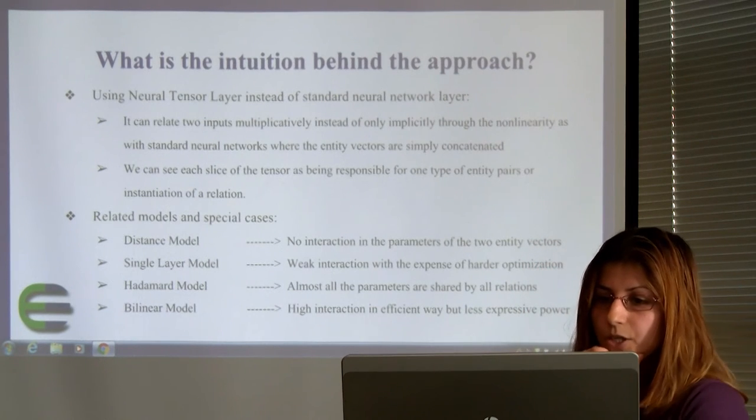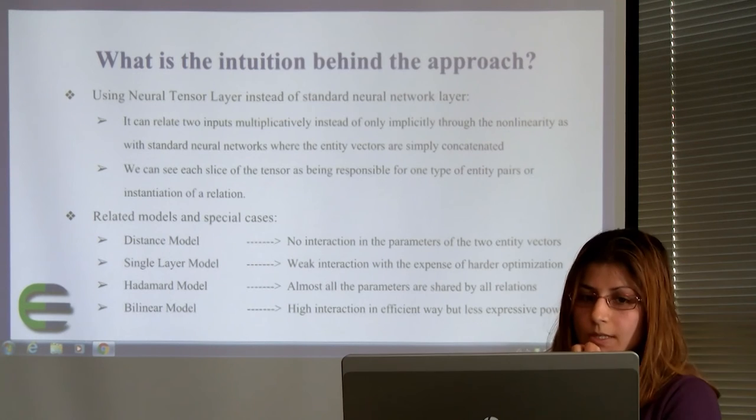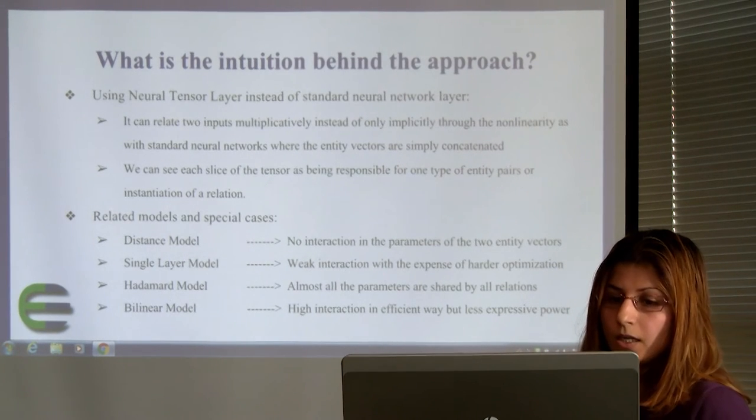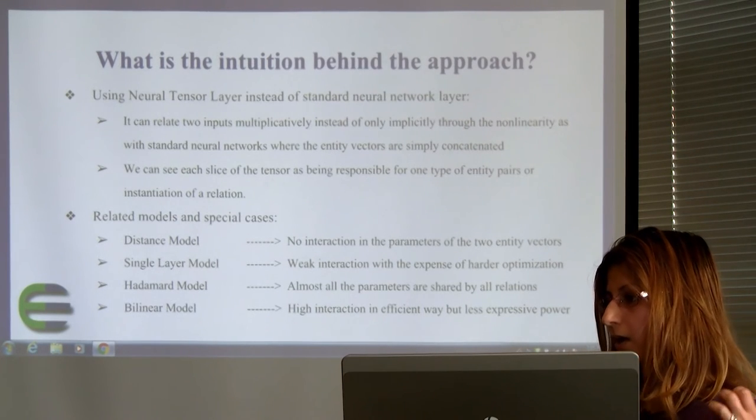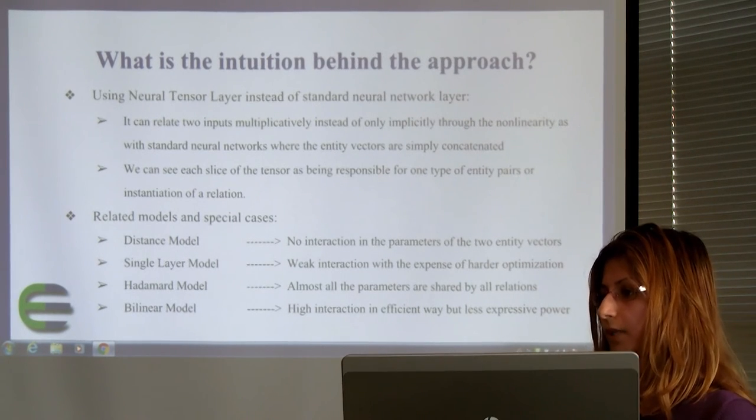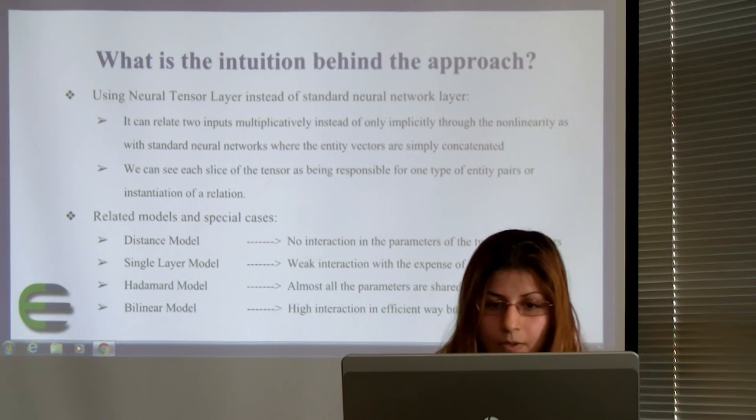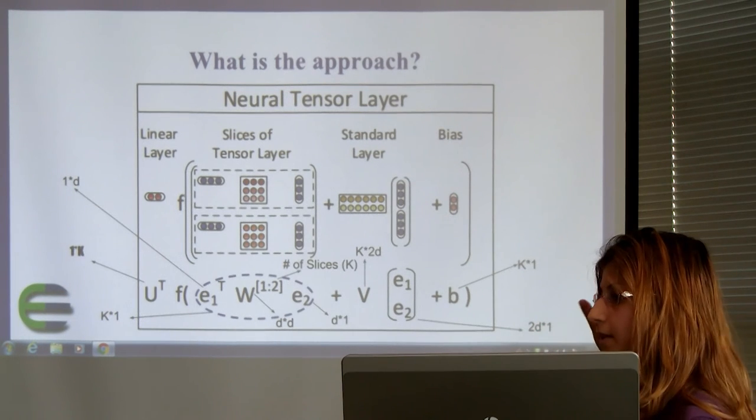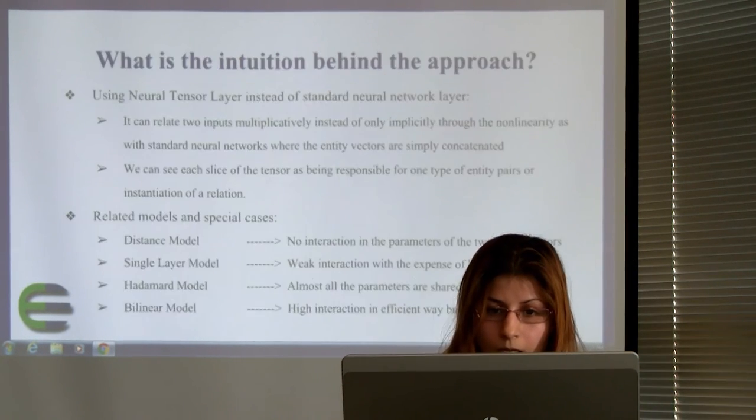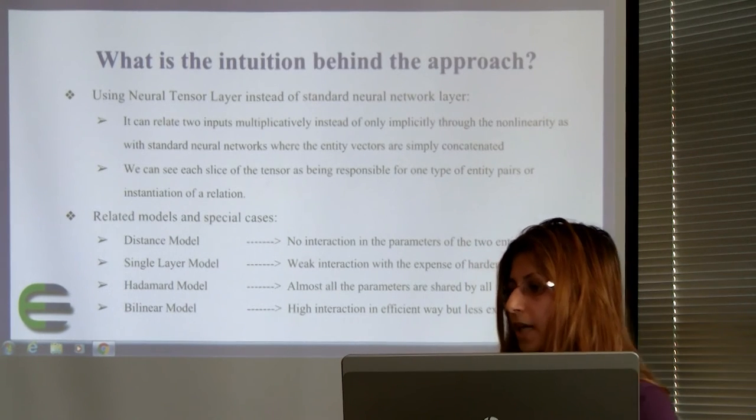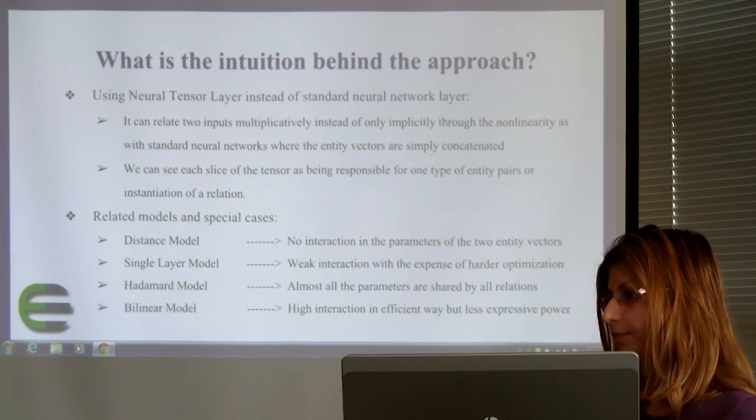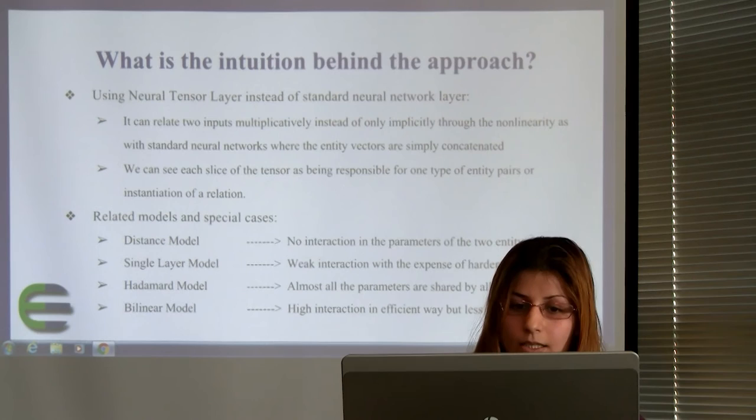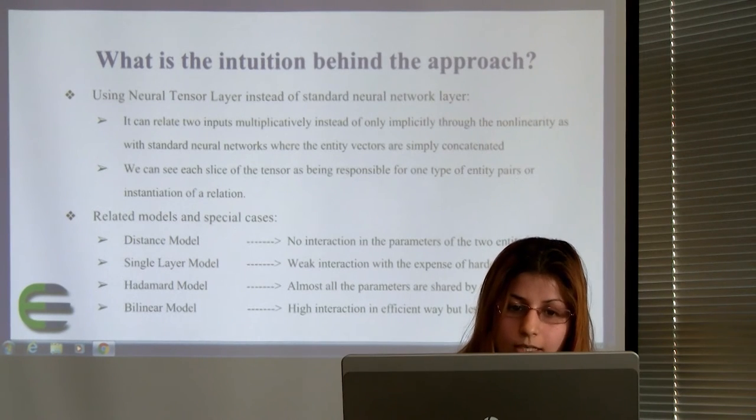What is the intuition behind this approach? Why they use, for example, neural tensor network instead of a standard neural network? Because they want to allow the two entities to have enough interaction. For example, here, two entities has interaction through a multiplication by a slice of a tensor. Because they assume that using more interaction, they can get a better result, and in the result, they also show that this assumption is true.